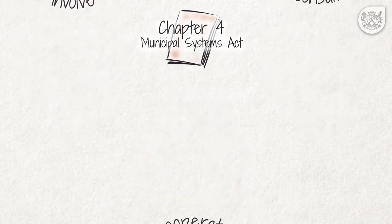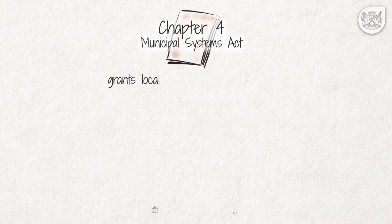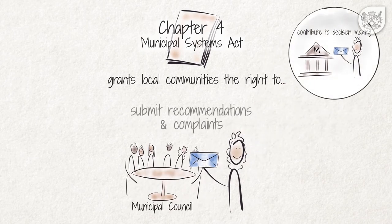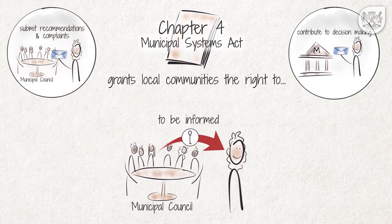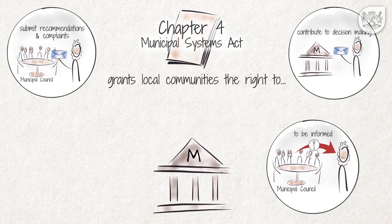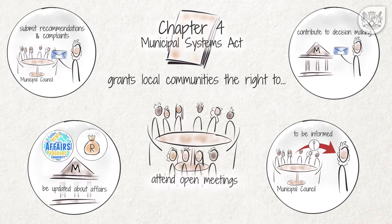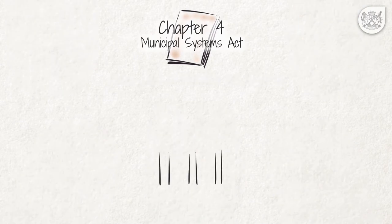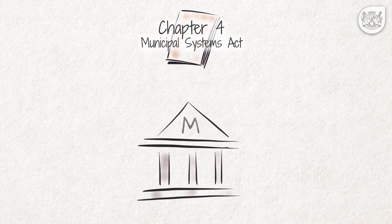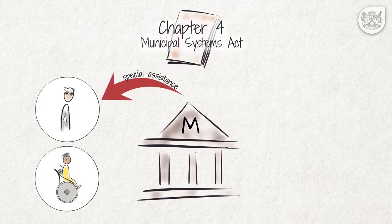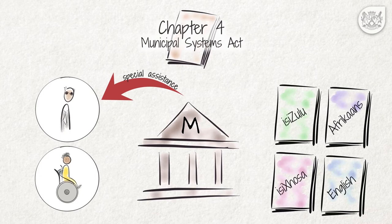The Municipal Systems Act also requires municipalities to consult the local community about municipal service delivery and cooperate and communicate with the local community. At the same time, the Municipal Systems Act grants local communities the right to contribute to decision-making, to submit recommendations and complaints to the municipal council, to be informed of council meetings and decisions, to be updated about municipal affairs including its finances, and to attend open meetings of the municipal council. The Act also requires that people who cannot read or write and people who have disabilities receive special assistance to understand what is being discussed, and requires municipalities to accommodate the language preferences of the community.